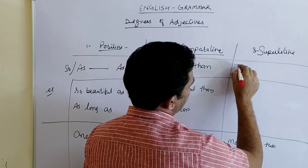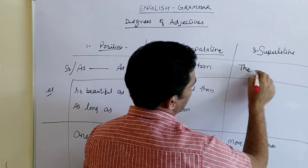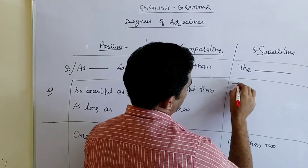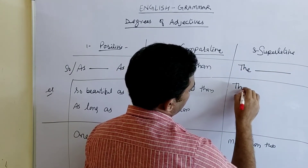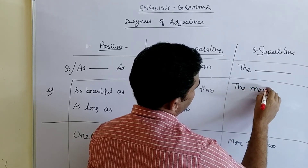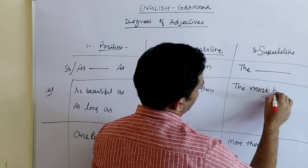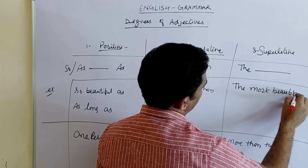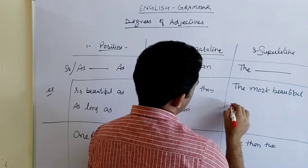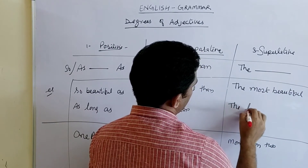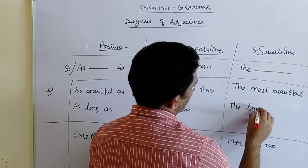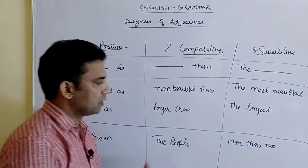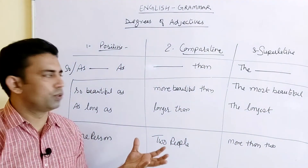When the comparison is done between more than two people, then it becomes the superlative degree. Here we use 'the' first, followed by the superlative form of the word. For example: 'the most beautiful' or 'the longest'. These are the forms which are used in the superlative degree.